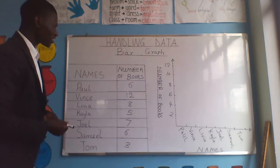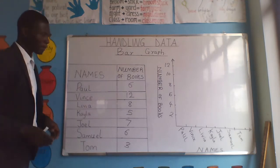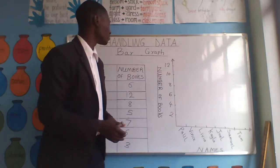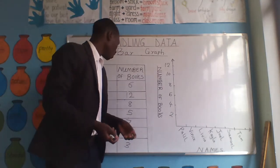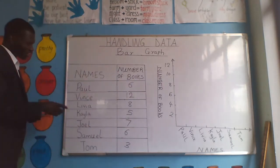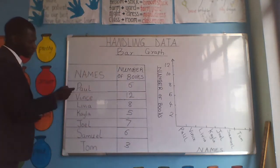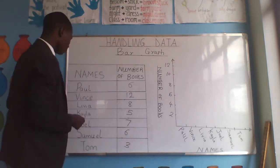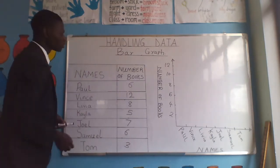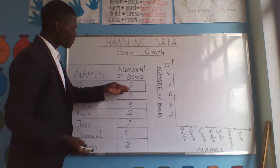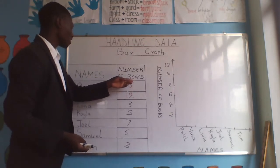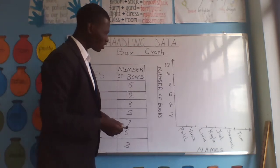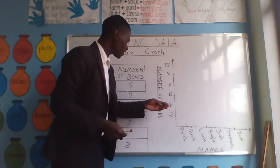Let us start to present this data using our bar graph. The first data is the name Paul. Paul has 60 books. How do we present these 60 books in the bar graph?